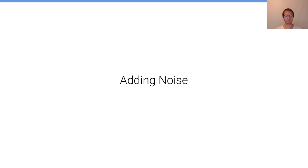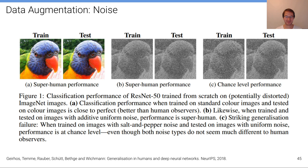An important augmentation technique is adding per-pixel noise or more structured noise to input images — it's perhaps the first thing you would do when starting with data augmentation. Deep neural networks are actually quite sensitive to noise. If you add noise only to test images, it's very likely that performance will drop dramatically.